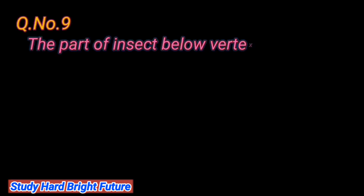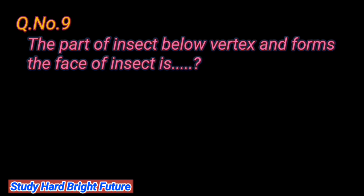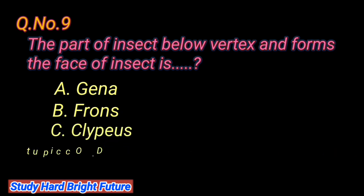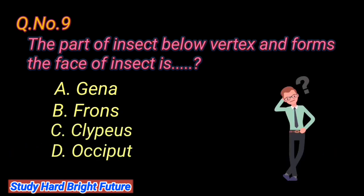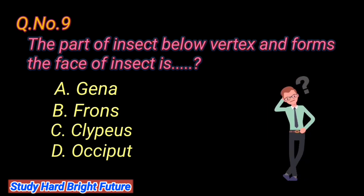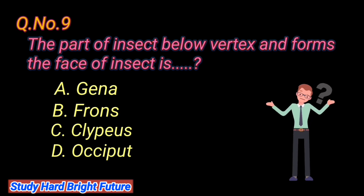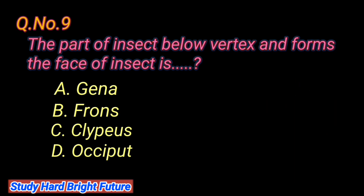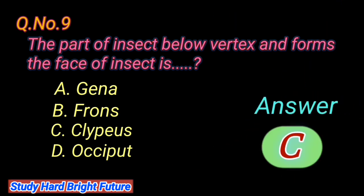Question number 9: The part of insect below vertex that forms the face of insect is. A. Gena, B. Frons, C. Clypeus, D. Oxybut. The right answer is C. Clypeus.